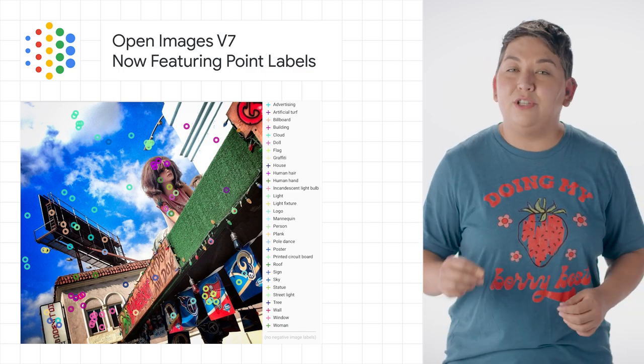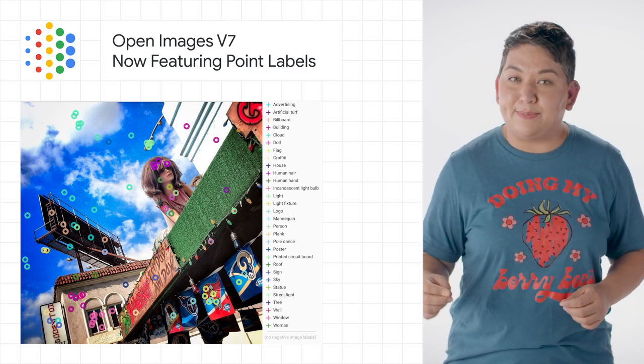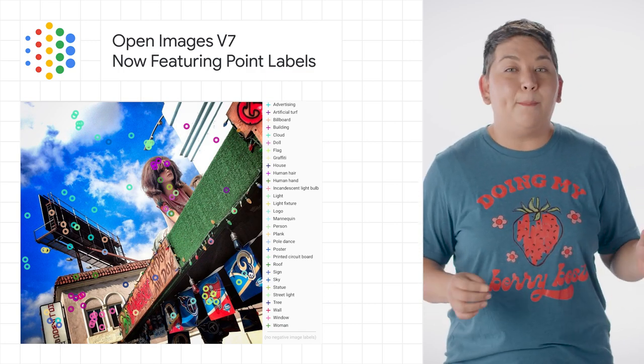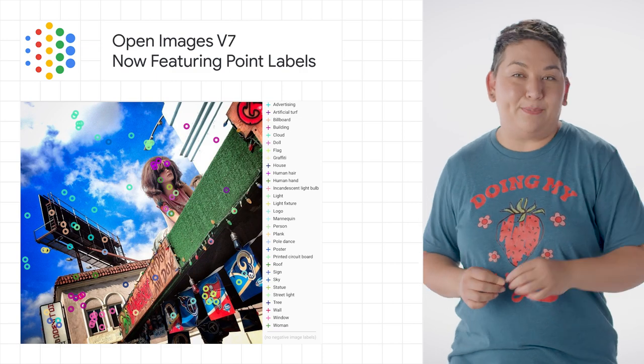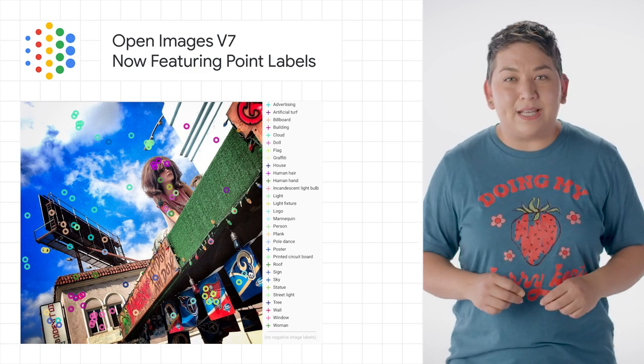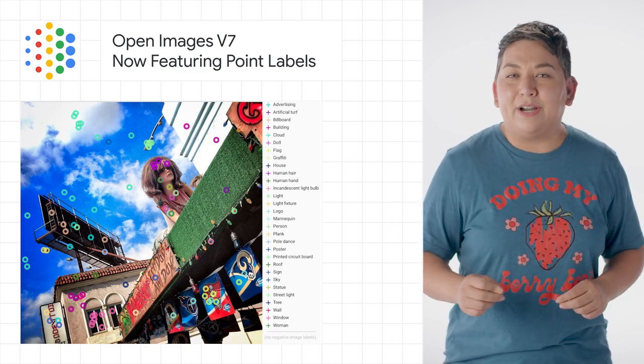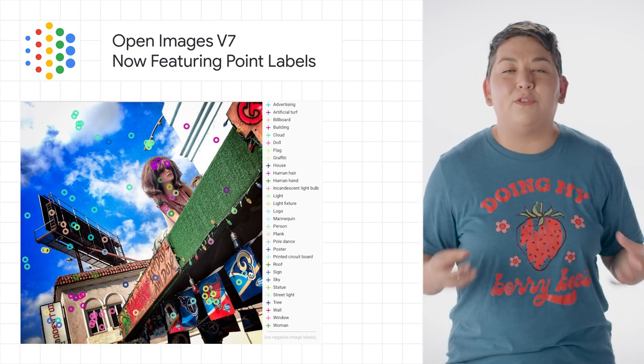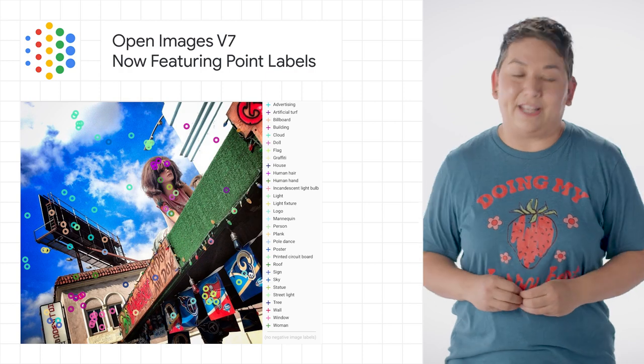V7 has new annotation types called point-level labels, and visualization tools that allow a better exploration of the rich dataset available.